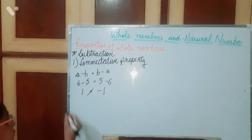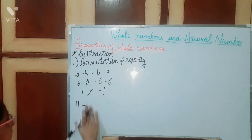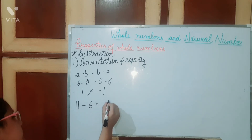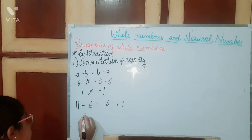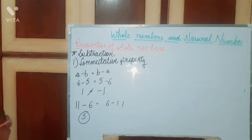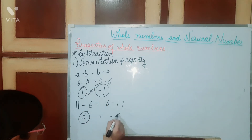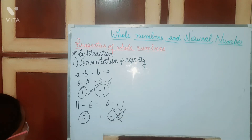Let me give another example. Take 11 minus 6, and compare it to 6 minus 11. If we subtract, we get 5 here, which is a whole number. But for 6 minus 11 we get minus 5, and minus 5 is not a whole number. So this property does not hold for subtraction.